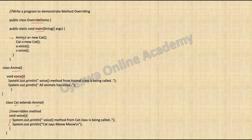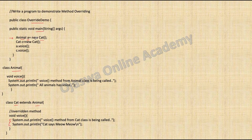Then we have a class OverrideDemo that has the main method. Pay attention carefully: animal a = new Cat. In this statement, the reference variable a is of type Animal and the object is of type Cat. Cat is an Animal, so when you have an IS-A relationship — that is, inheritance — you can assign an object of subclass to the superclass reference. You can assign a Cat object to an Animal reference, but the other way round is not possible. You cannot have a subclass reference and a superclass object.